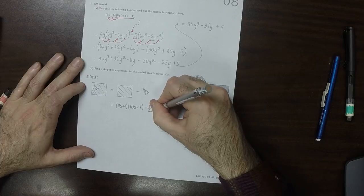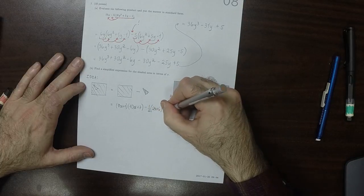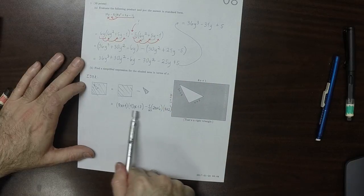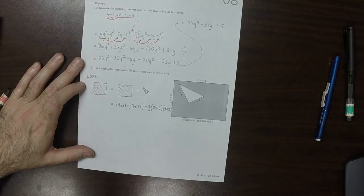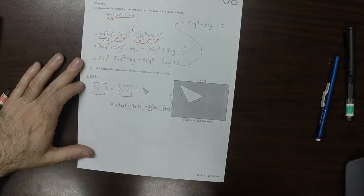2x plus 6 and then times x plus 2. So this is the rectangle minus the area of the triangle.